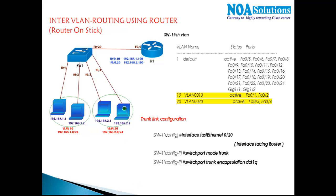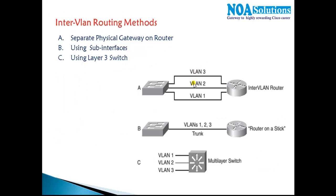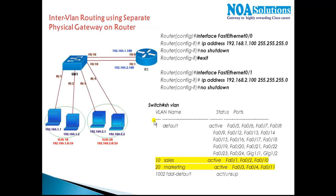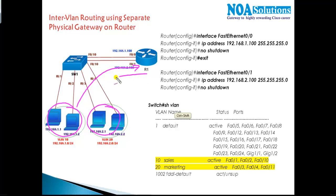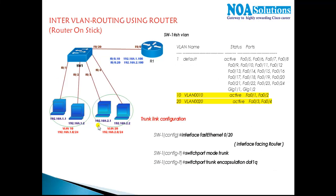In this section we will continue with our concept on inter-VLAN routing, but this time we are not going to use separate physical interfaces. We'll be using the second method, which is using sub-interfaces. One of the major drawbacks with the previous method is if you have VLAN 10 and VLAN 20 and want them to communicate, we need two separate physical interfaces — one per VLAN — which is not recommended.